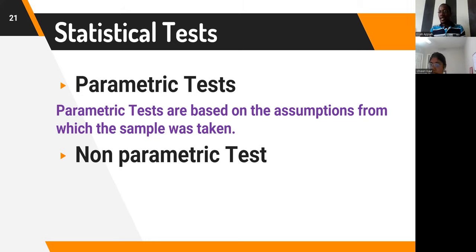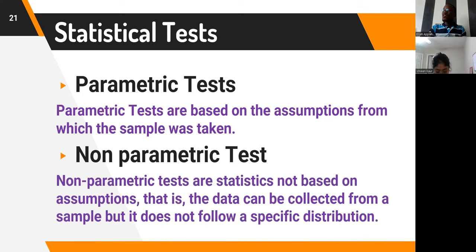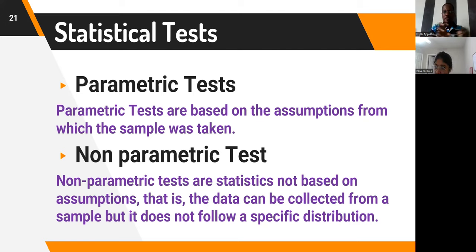If the data is skewed, we come up with transformations to make it normal. When we make assumptions about the distribution from which the sample was taken, we are within the realm of parametric tests. Non-parametric tests are not based on any assumption whatsoever. The data can be collected from a sample but does not follow a specific distribution. If we do not make any assumption that the data follows a normal distribution, we can describe it using a non-parametric test.